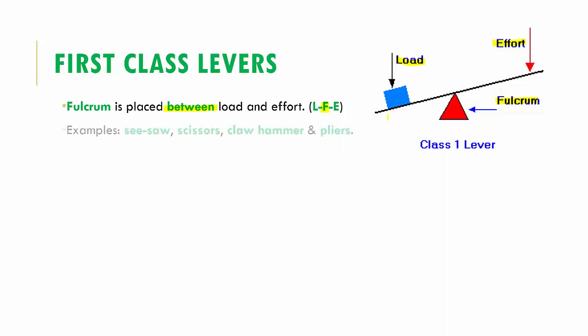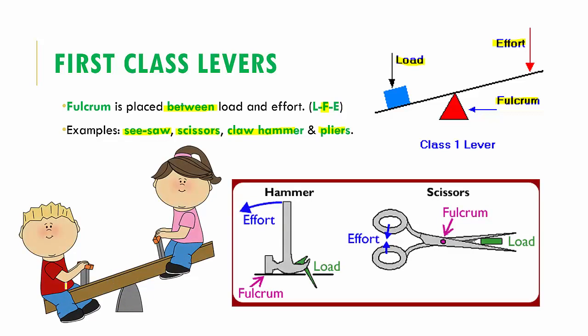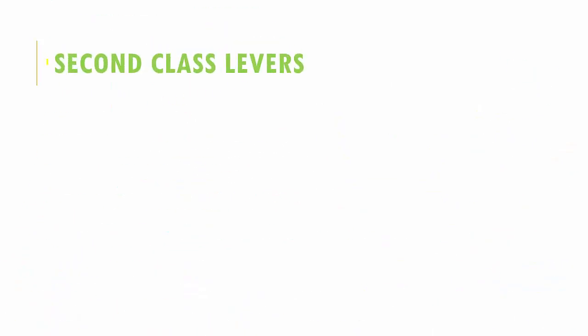Examples of first class levers include the seesaw, scissors, a claw hammer, and pliers. In a seesaw, the fulcrum is in the middle with load and effort on either side. With a claw hammer pulling out a nail, the nail is the load, your pull is the effort, and the fixed part of the hammer is the fulcrum. With scissors, you apply effort on one side to cut the load — paper or plastic — and the center fixed point is the fulcrum.